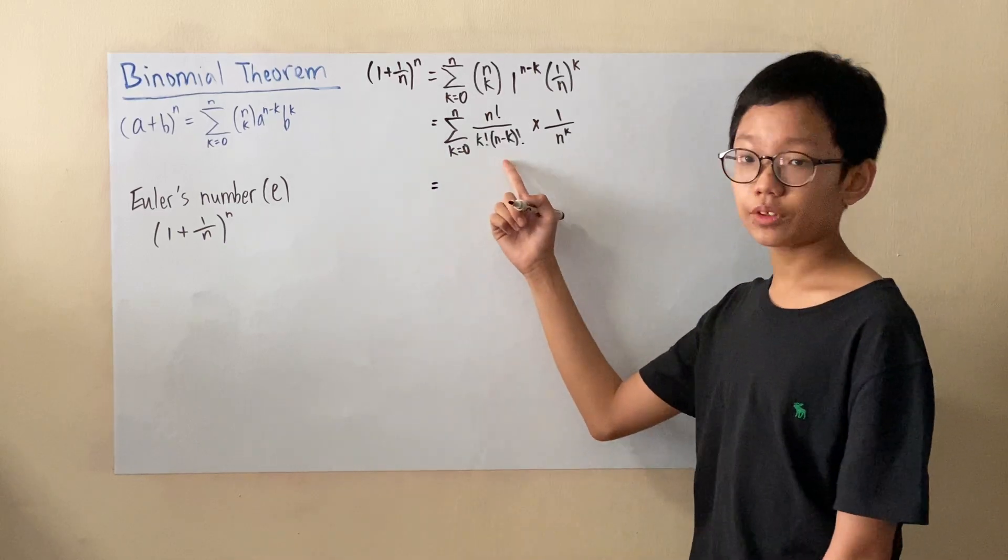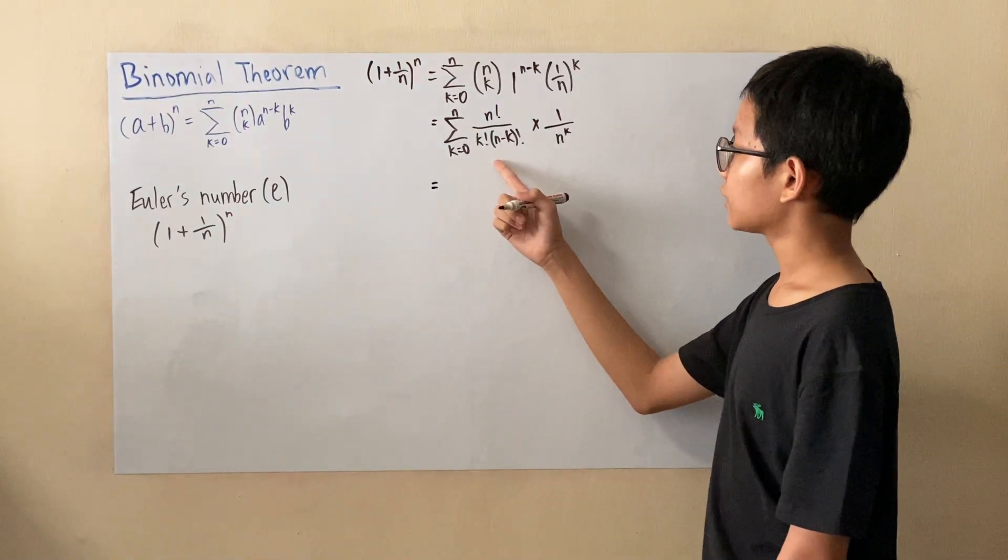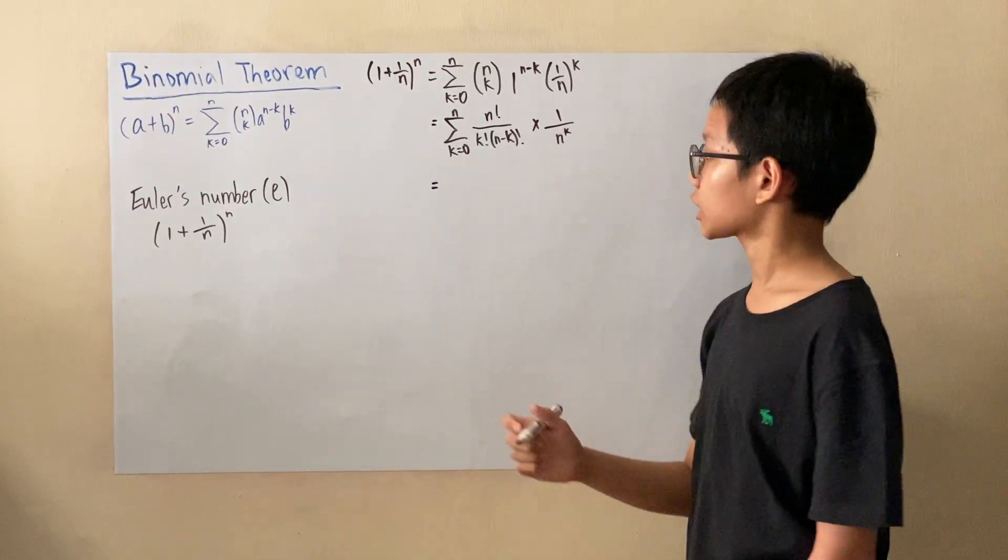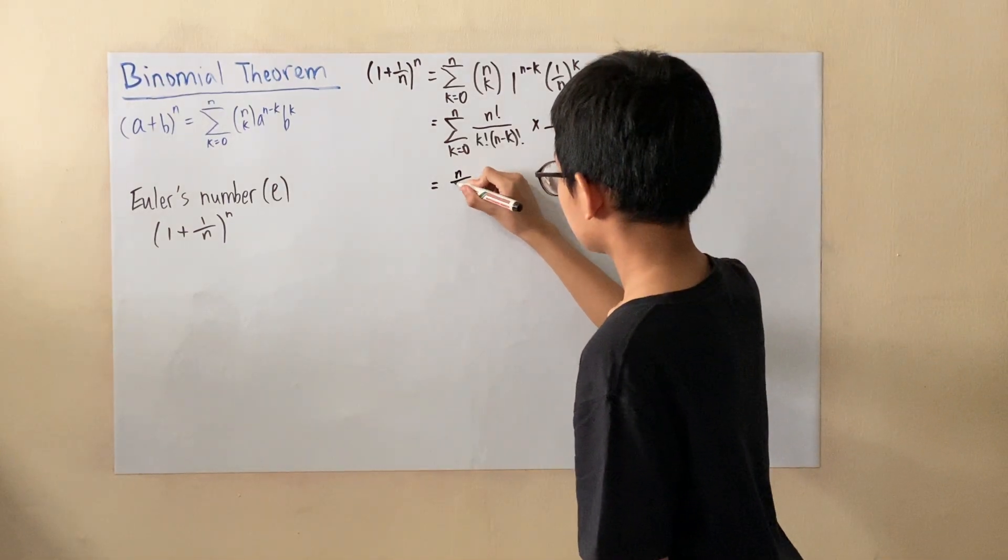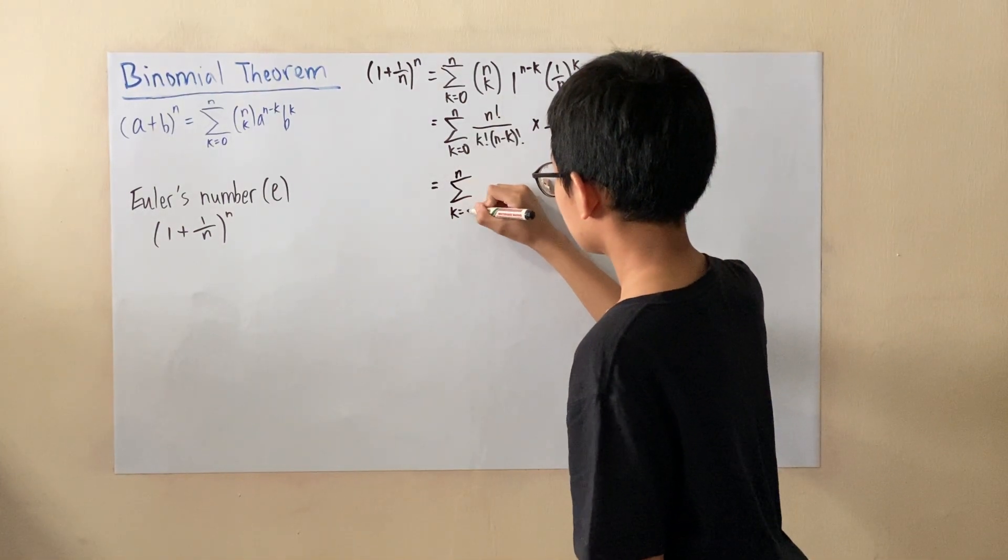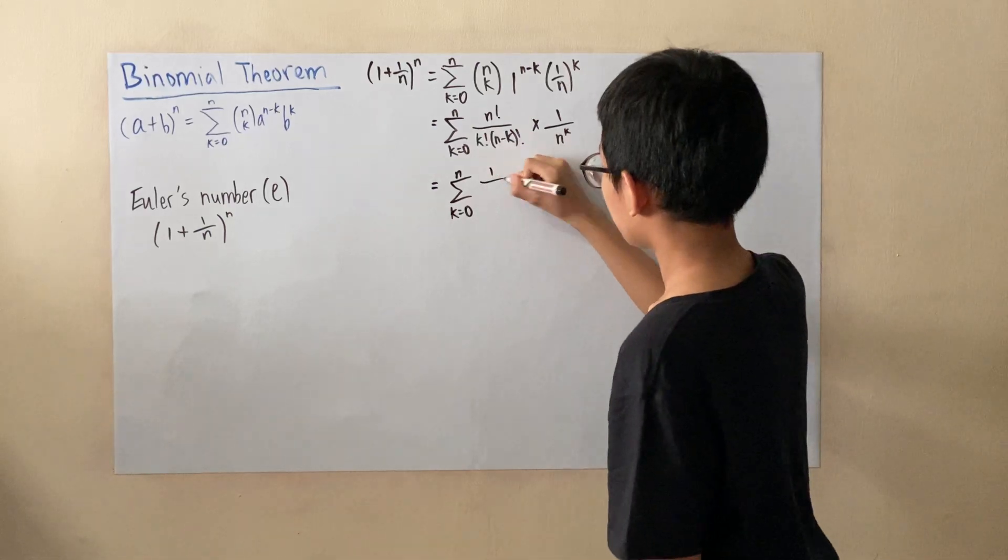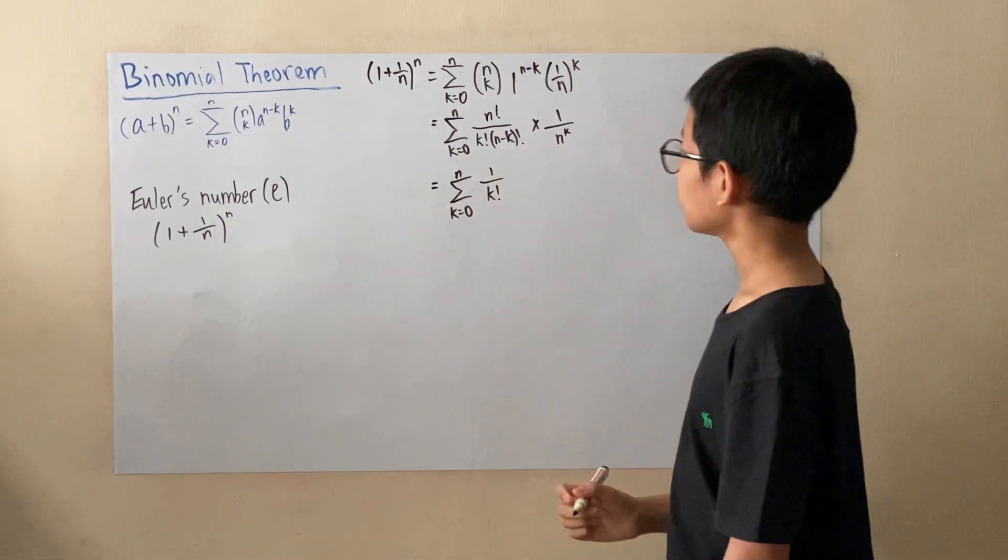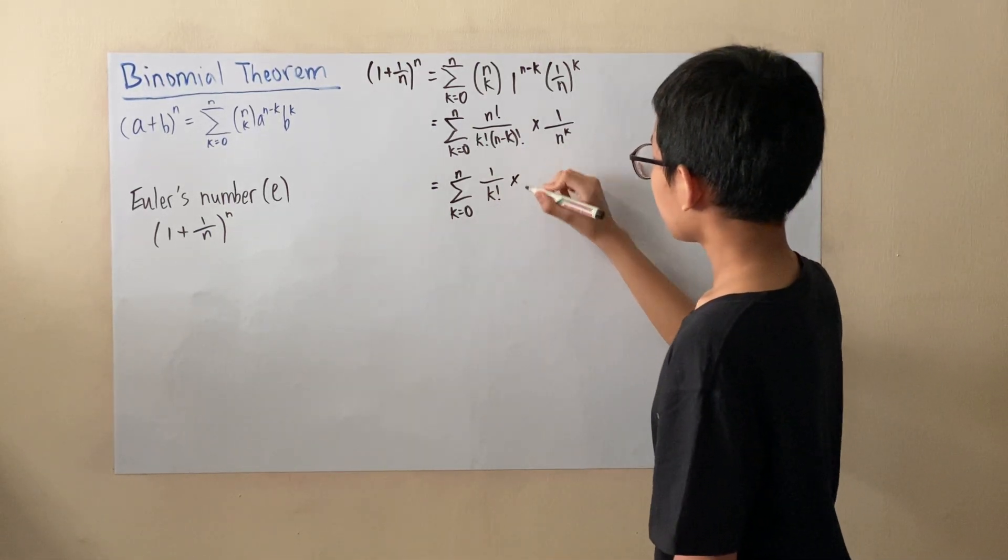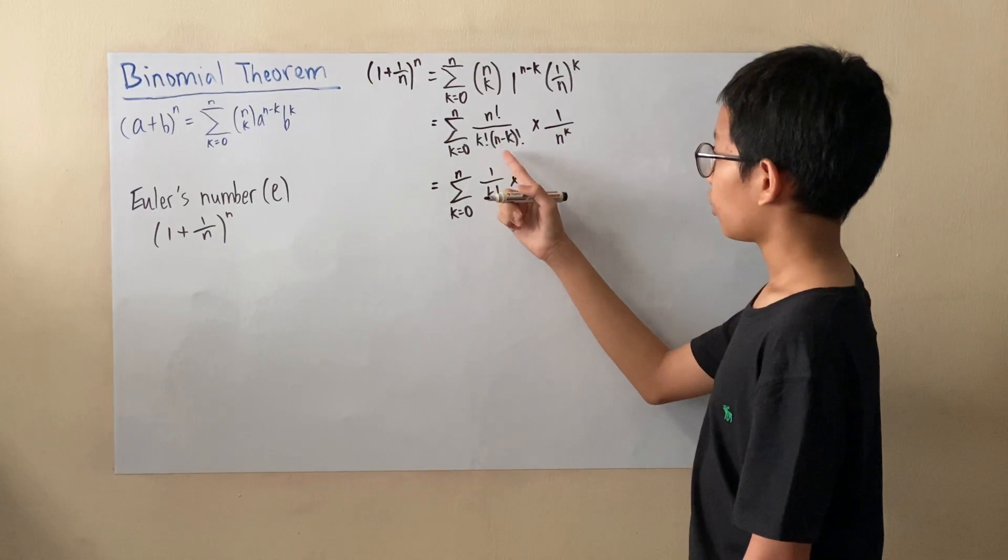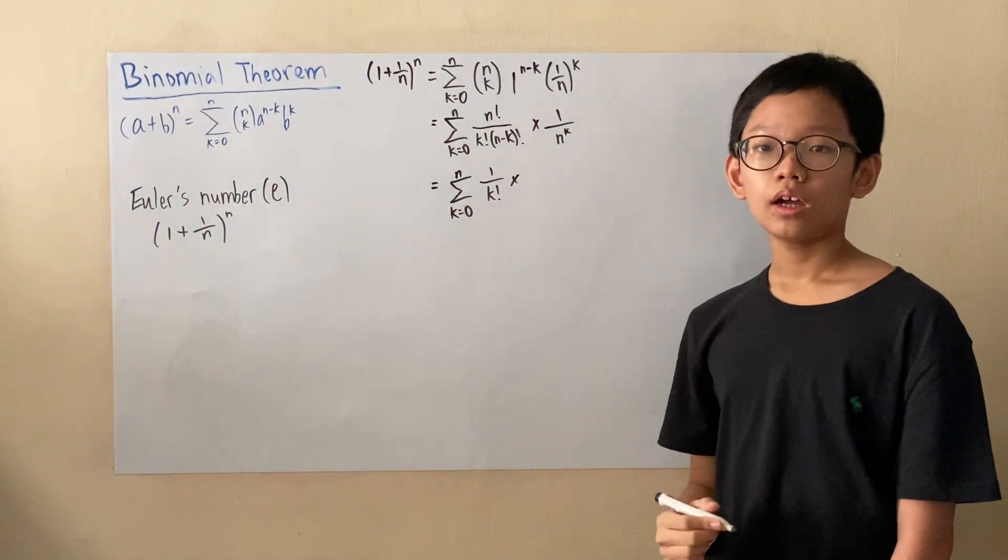So now, we'll be trying to simplify this fraction over here by splitting it into two fractions. So the first fraction will be 1 over k factorial. And the second one will be n factorial over (n-k) factorial.